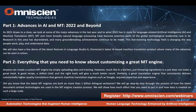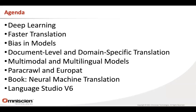Tomorrow we'll be talking about everything you need to know about creating a great custom MT engine. It goes through a lot of details, including huge volumes of data — seriously big, where engines are being trained on billions of sentences. Just five years ago a big engine was 5 to 10 million sentences; now we're in the billions. Today Philip is going to go through deep learning, faster translation, bias and models, document level and domain specific translation, multimodal models, and he's going to talk about Paracrawl and Europat — two data projects Omnisian has recently been involved in. He'll also mention his book, and then I'll jump in at the end to talk about Language Studio 6 and give you a live demo.